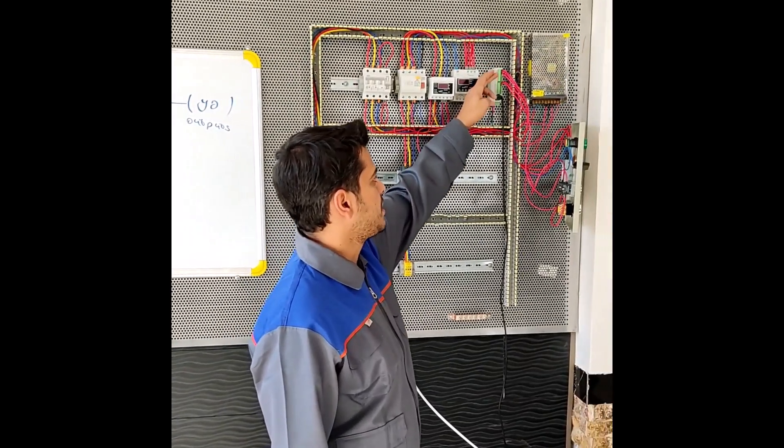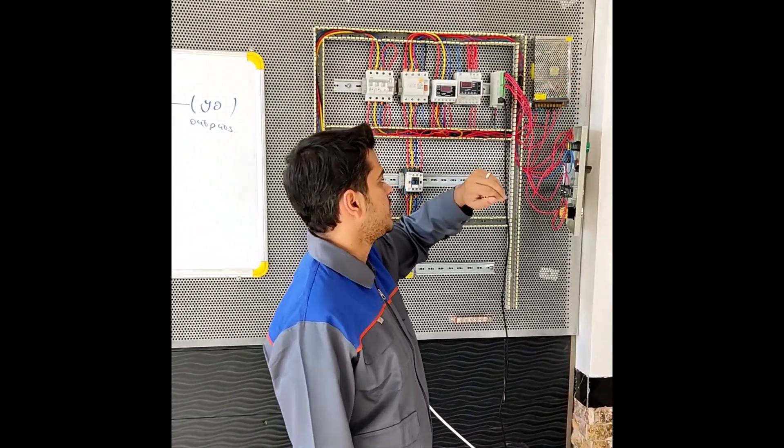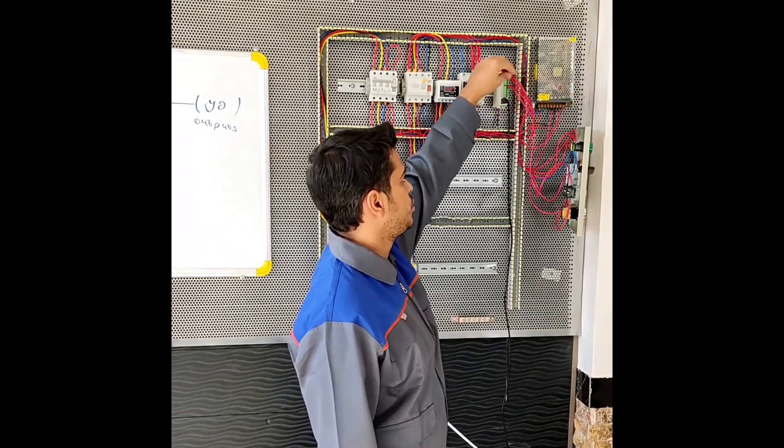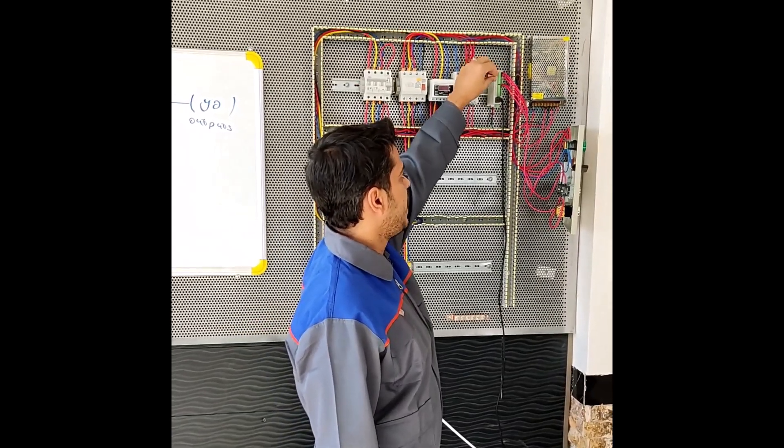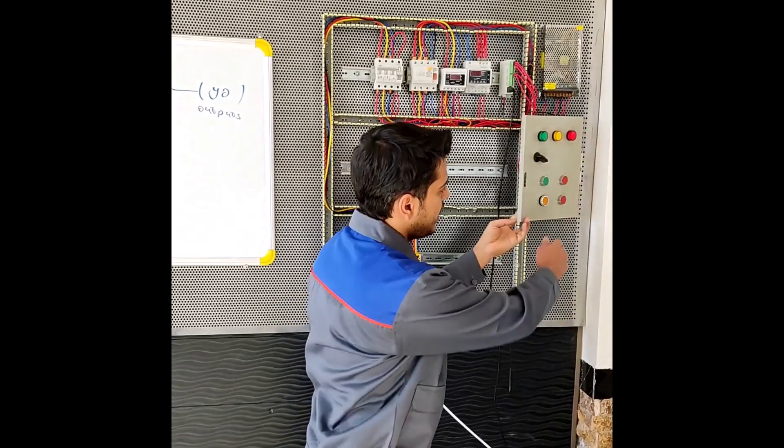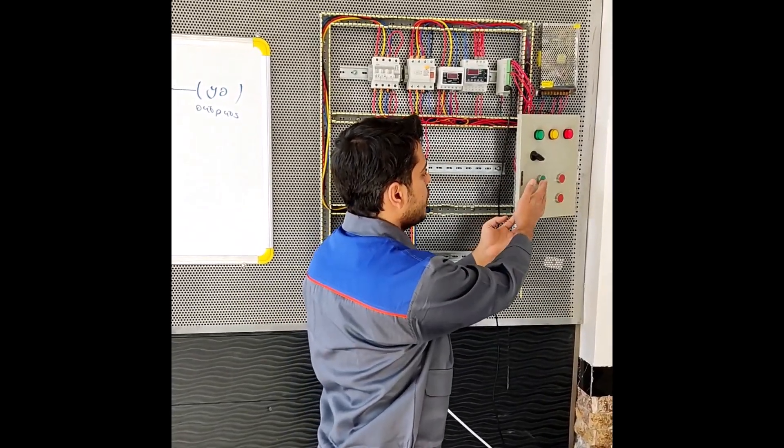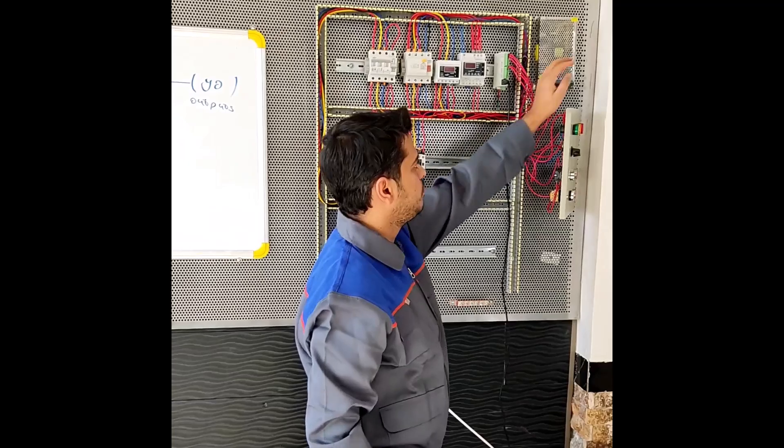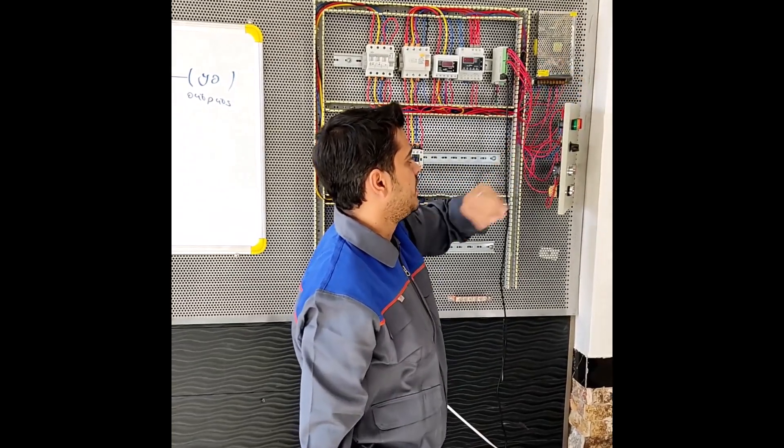First, because the PLC inputs are 24 volts, we must use a 24V power supply. We connect the positive end of the power to the SS base and connect the X0 and X1 inputs to the start and stop inputs.